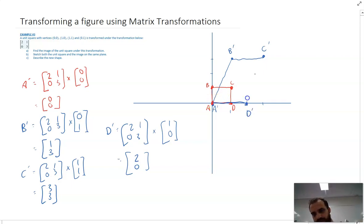That's the image of D, and now we have this. Now it's poorly drawn. Describe the new shape. Well, that's a length 2, that's length 2, this is moved over 1, this is moved over 1. It's a parallelogram.